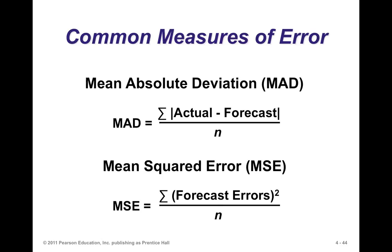If you under-forecasted by 10 units and you over-forecasted by 10 units, your average error is 10 units. But if we added those two, the negative 10 would have canceled out the positive 10, and all of a sudden your error appears to be zero. Well, that's no good.